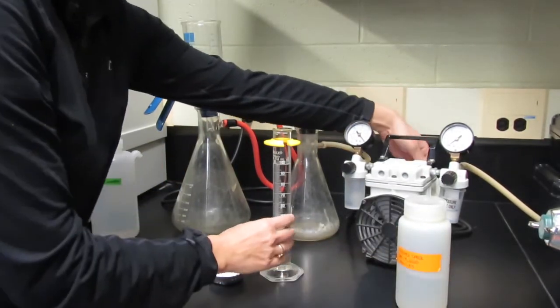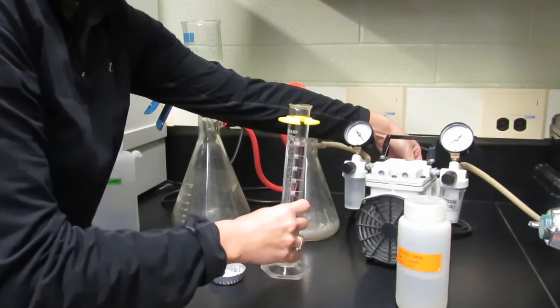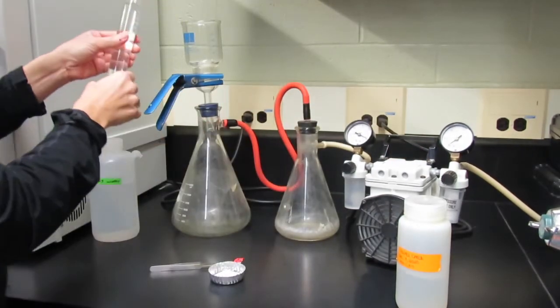Turn on the vacuum and pour the contents through the funnel. This will draw down into the beaker.